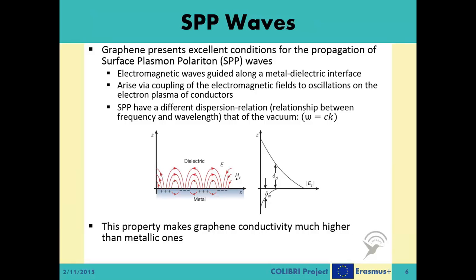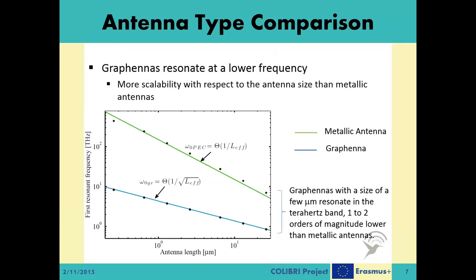The fact that graphene exhibits the propagation of SPP waves increases its conductivity much higher than metallic antennas. Graphennas resonate at a lower frequency than their metallic counterparts. In metallic antennas, the resonance frequency increases inversely with the size of the antenna. On the other hand, in graphennas, this frequency increases inversely with the square root of the size of the antenna.